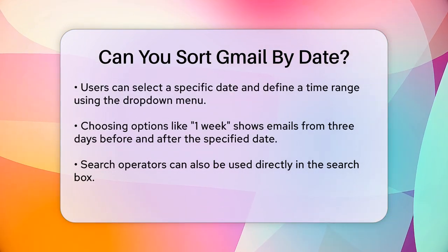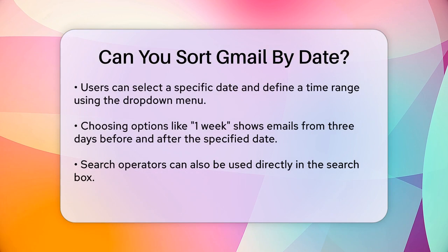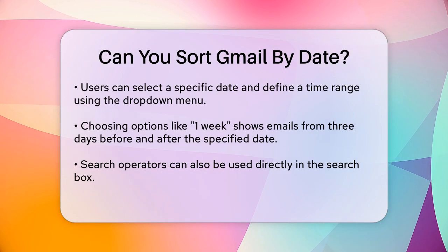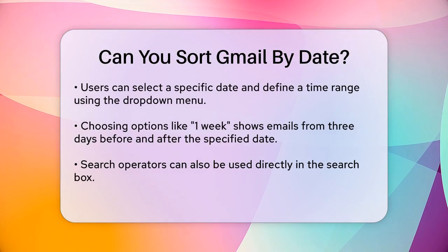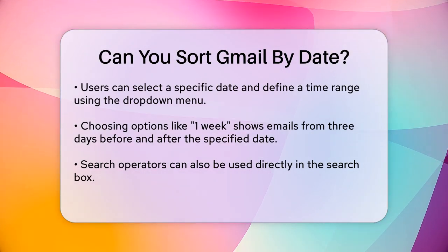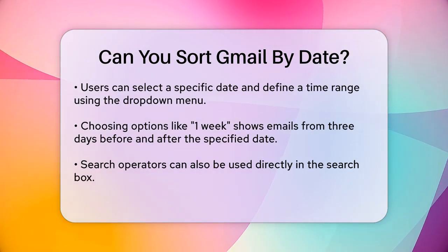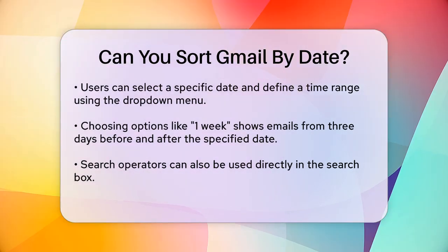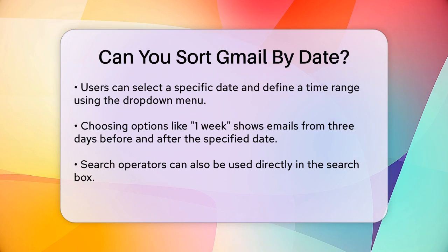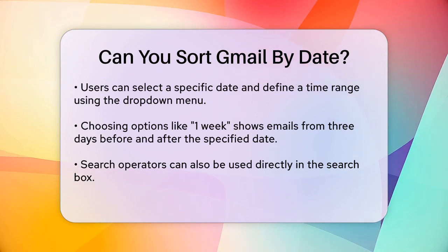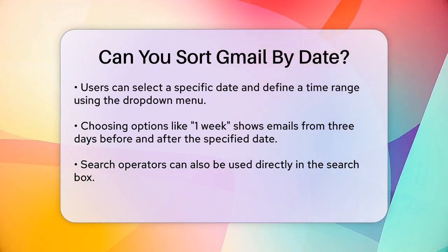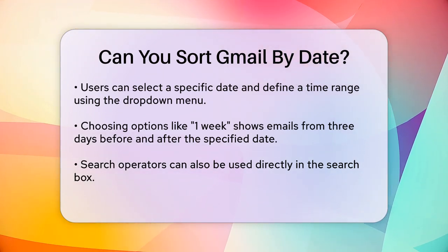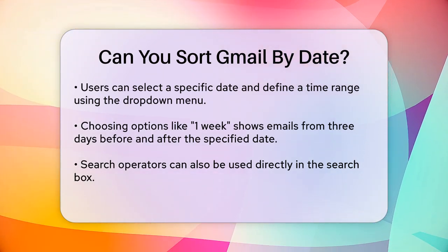For example, if you select one week, you'll see emails from three days before your specified date, the date itself, and three days after. This can be very useful if you need to check emails received around a particular time.